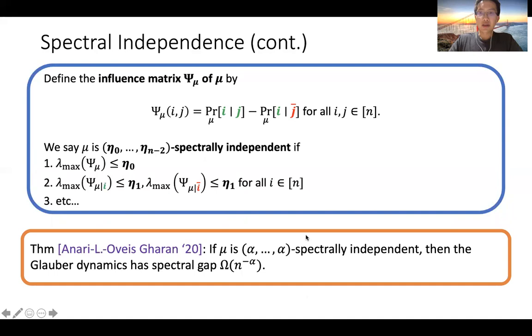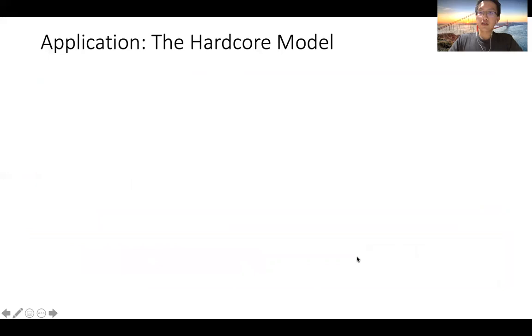In particular, if alpha is a constant independent of n, you get inverse polynomial spectral gap — in other words, polynomial time algorithms.